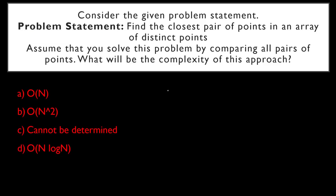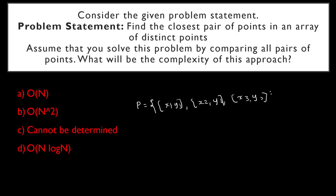Now, how will be the input for this problem? We will have a two-dimensional array called P. This array will have pairs of X and Y coordinates for each point — X1, Y1, then X2, Y2, then X3, Y3, and so on.